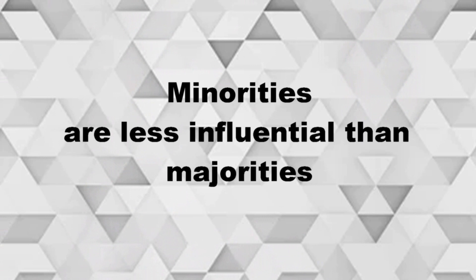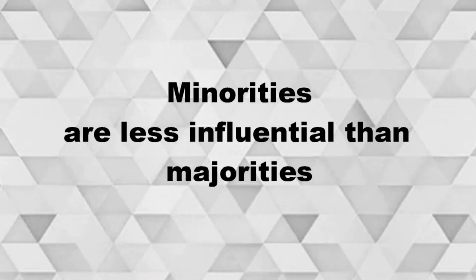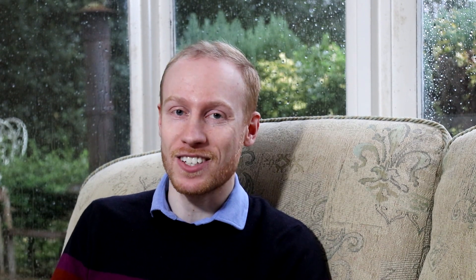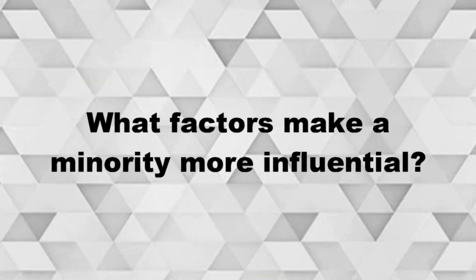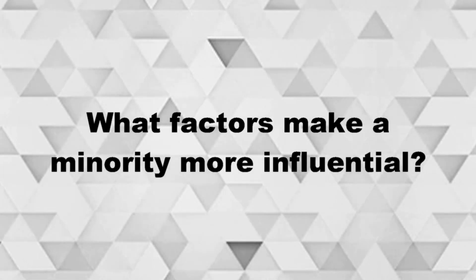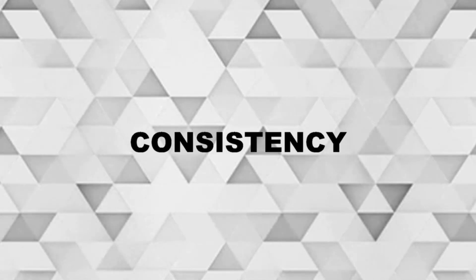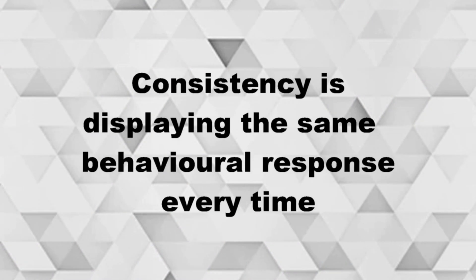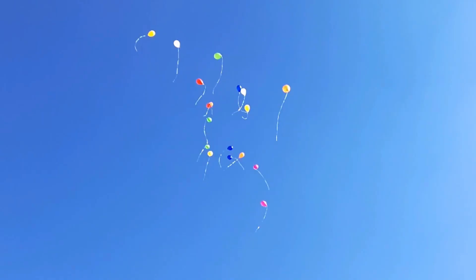The size of this minority influence effect is smaller than the majority influence noticed by Asch in his lines paradigm, for example. But it's still a notable thing, and this is how change happens. The first element that makes a minority more influential is consistency in expressing its opinion — if a minority is consistent, it is more likely to be convincing.